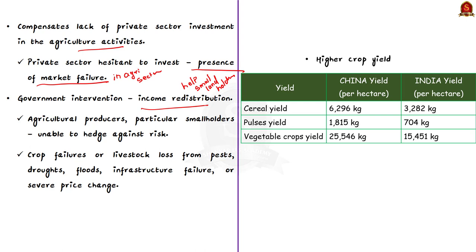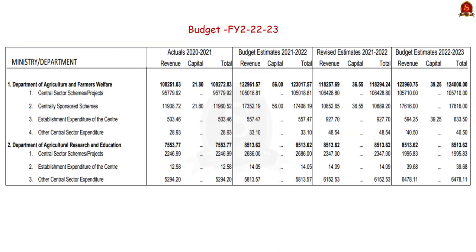The agriculture sector also gives higher crop yield. For example, as shown in the table, since the Chinese government spends more than the Indian government in the agriculture sector, the yield of China in cereal, pulses, and vegetable crops is higher than India.